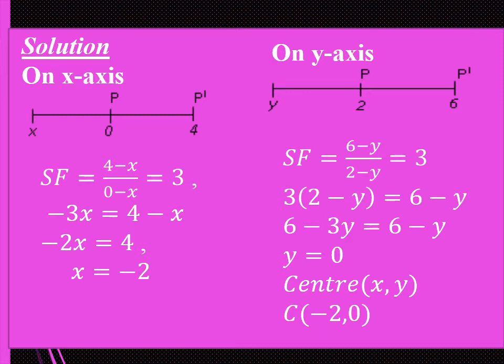We are going to look at the movement along the x-axis and movement along the y-axis separately. On the x-axis, point P moves from 0 to 4 — that is P'. The object distance is x to 0 and the image distance is x to 4. Since the scale factor equals image distance over object distance, we get (4 minus x) over (0 minus x) equals 3. From this, we get negative 3x equivalent to 4 minus x.